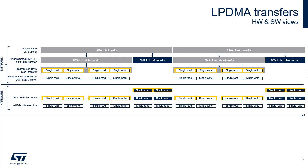This timing diagram highlights the relationship between the software configuration of a channel and the transactions that are generated on the AHB master port. Two consecutive linked list items, or LLIs, are represented: first LLI number N, and then LLI number N plus 1.